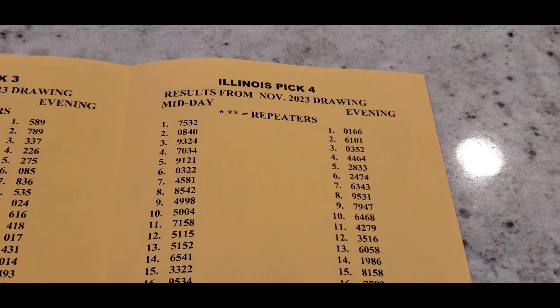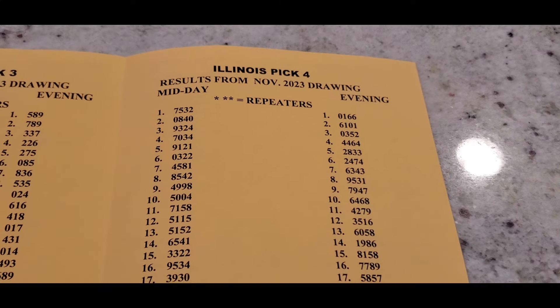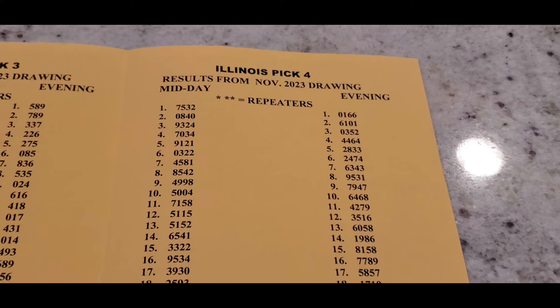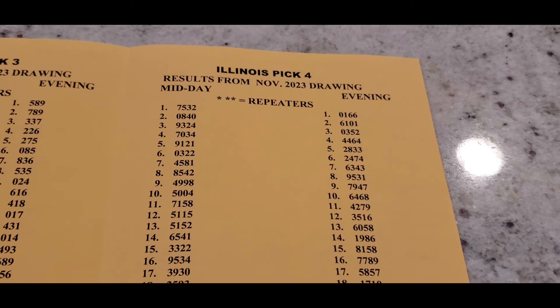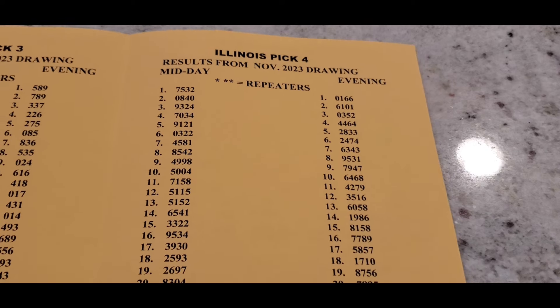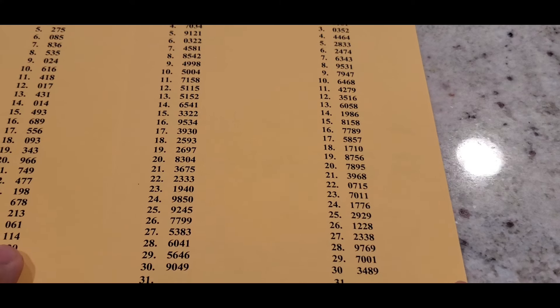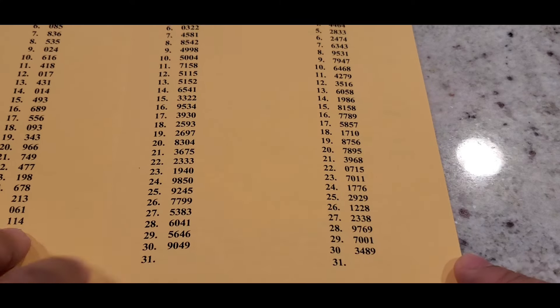Which is very similar to that first number, so something you might want to definitely play on back to back days. Then we go all the way to the 17th, 3930, and then you also have 5857. Don't worry, I'm going to scroll up so you guys can see the end of the month right here. But we stopped at the 17th.